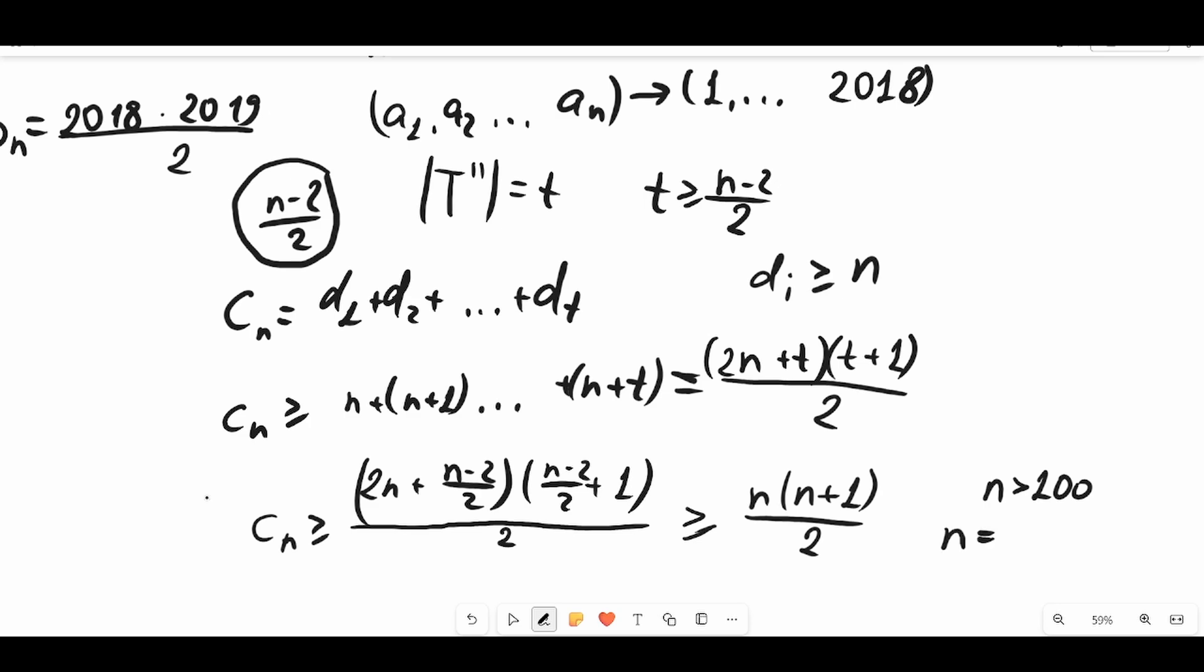So if n equals 2018, it is impossible to make up an anti-Pascal triangle which has the property that every number equals the absolute difference to its lower neighbors. This was all I wanted to discuss for today. If you like my videos, don't forget to like and subscribe.